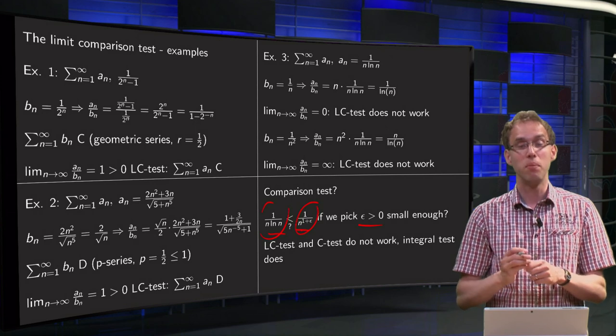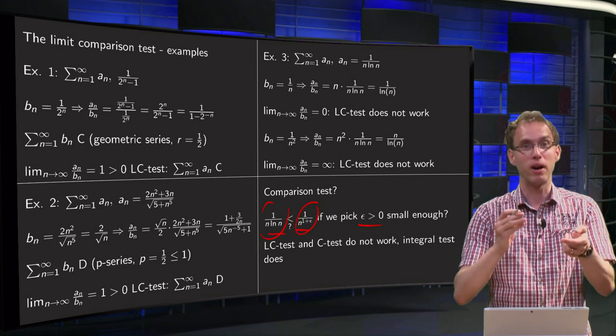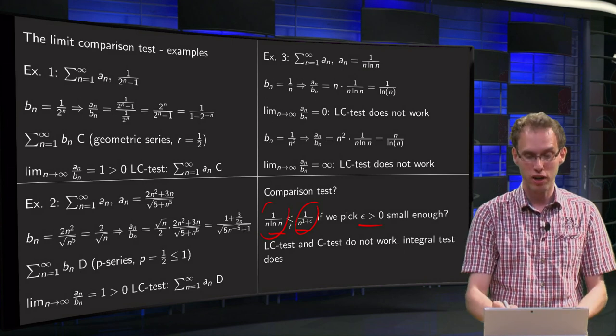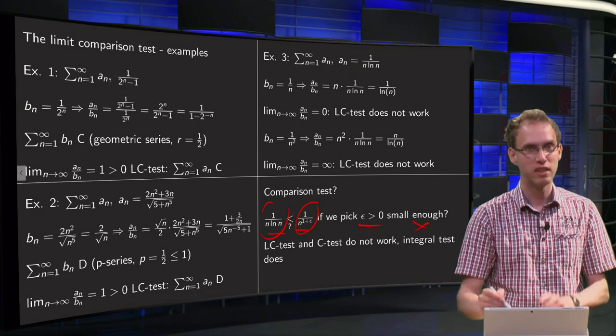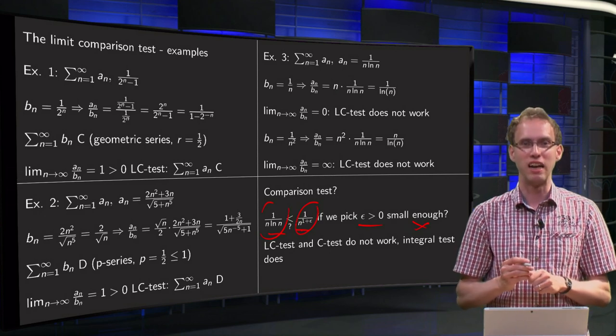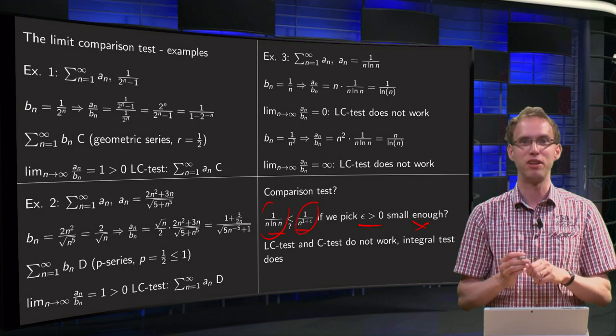But no, no matter how small you pick your epsilon, the n to the power epsilon will always win in the end over the ln of n, so this argument will not work. This is the argument I tried, by the way, on the exam after all the other ones, and I knew that something fishy was going on, and it is wrong.